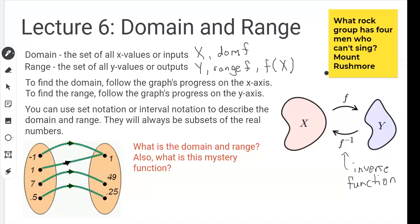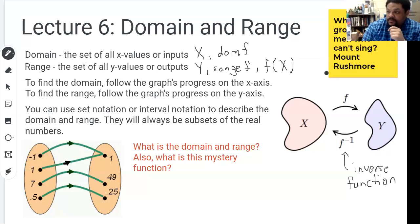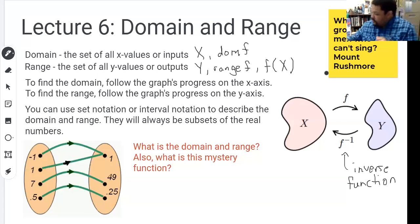To find the domain, you're going to follow the graph's progress on the X axis — when we do domain, you're always looking at the X axis. To find the range, we follow the graph's progress on the Y axis, because range is always all those Y values. We can use set notation or interval notation, and know that domain and range are always going to be sets of real numbers.